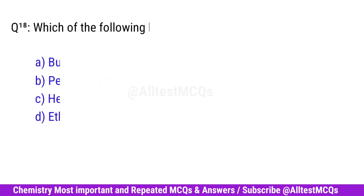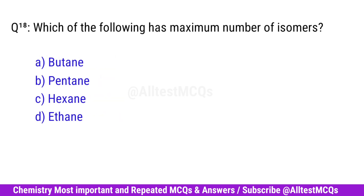Question No. 18. Which of the following has the maximum number of isomers? Right option is C. Hexane.